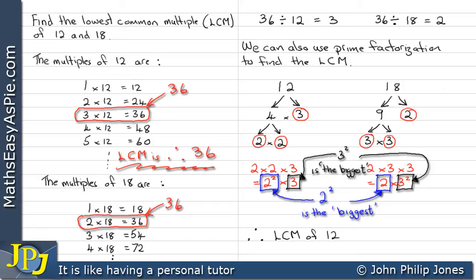So we can therefore say the lowest common multiple of 12 and 18 is the 2 to the 2 times the 3 to the 2, which is 4 times 9, which is 36.